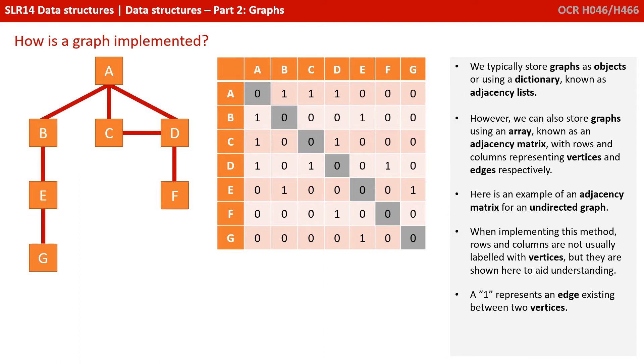Here's an example of an adjacency matrix for an undirected graph. When implementing this method, rows and columns are not usually labelled with vertices, but they're shown here to aid understanding. A 1 represents an edge existing between two vertices.